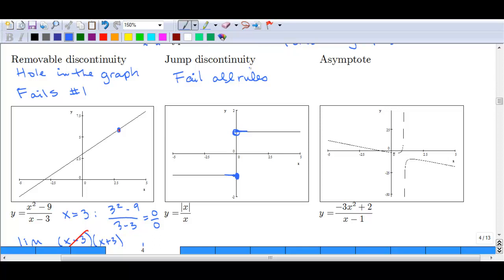An example here is the absolute value of x over x. And what happens here is when you plug in all the positive numbers, you end up with one. When you plug in all the negative numbers, for instance, negative two becomes positive two over negative two and you end up with a negative one. So that's all of these down here.